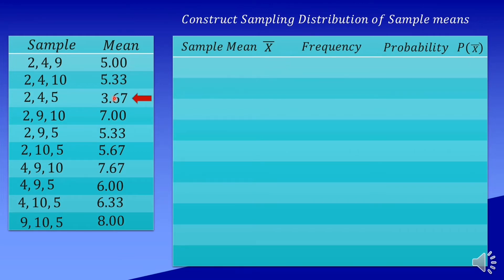Unang sample mean natin, kunin natin from the lowest mean, that is 3.67 and the frequency is 1. Next is 5.0 and we have also the frequency 1. Then next is 5.33 and it's written twice, so kita natin dalawa yung 5.33 and the frequency is 2.